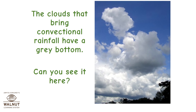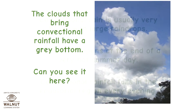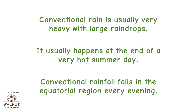The clouds that bring convectional rainfall have a grey bottom — can you see it here? Convectional rain is usually very heavy with large raindrops. It usually happens at the end of a very hot summer day. Convectional rainfall falls in the equatorial region every evening.